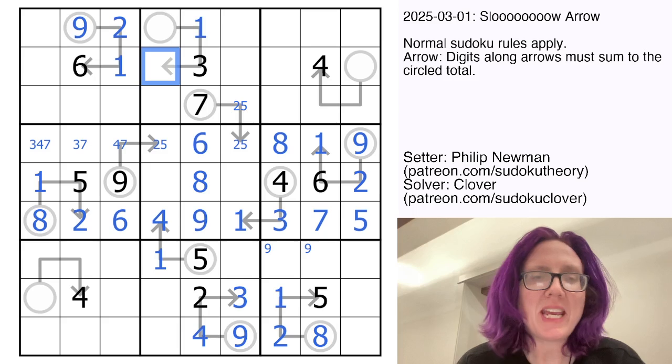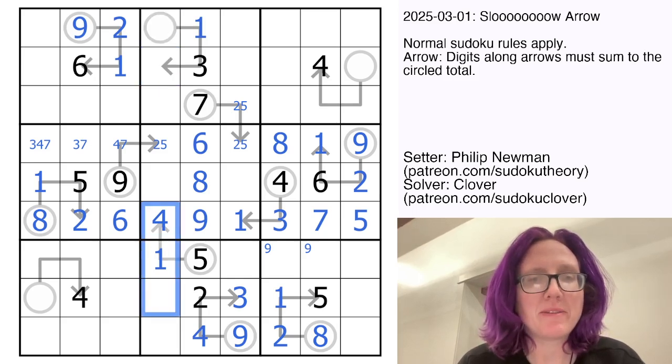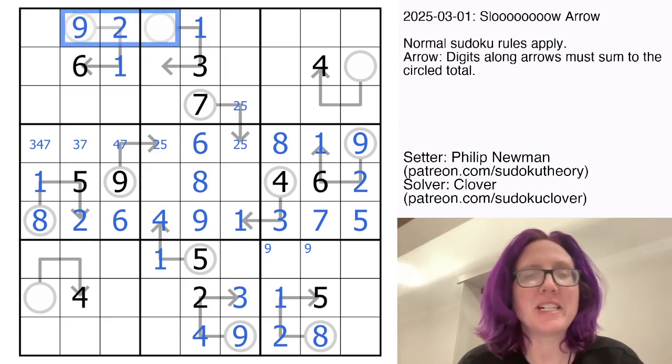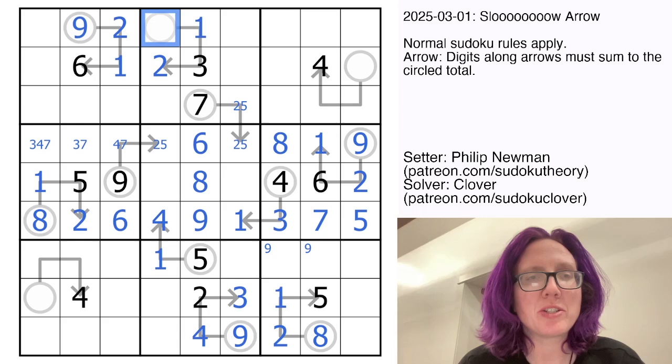One, three, and four would work. That would make eight, but we have a four in this column already. And finally, one, three, and five would work, which would make nine, but there's already a nine in the row. So this must be one, three, and two with a six. The two resolves this.